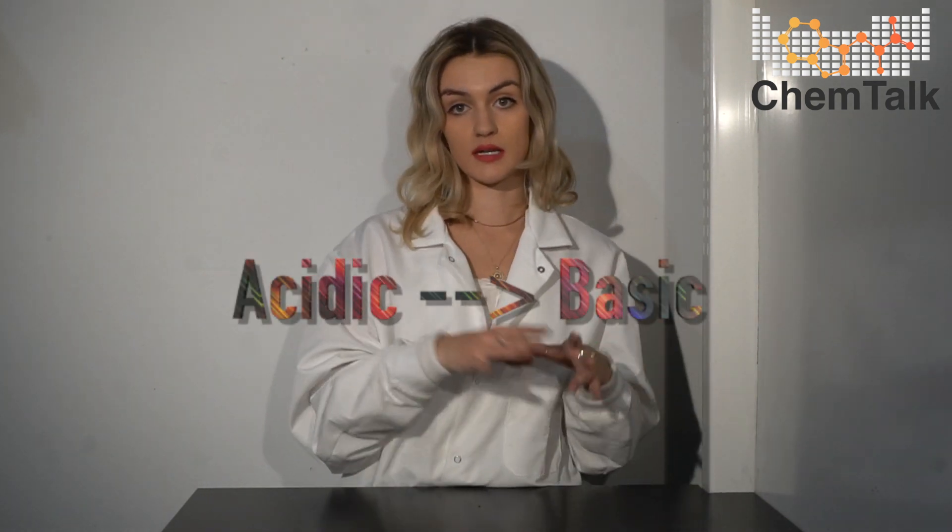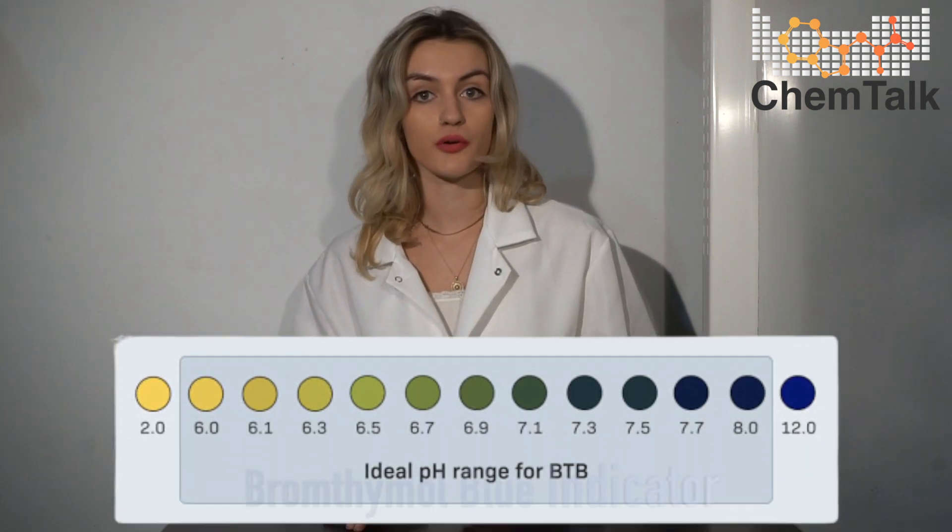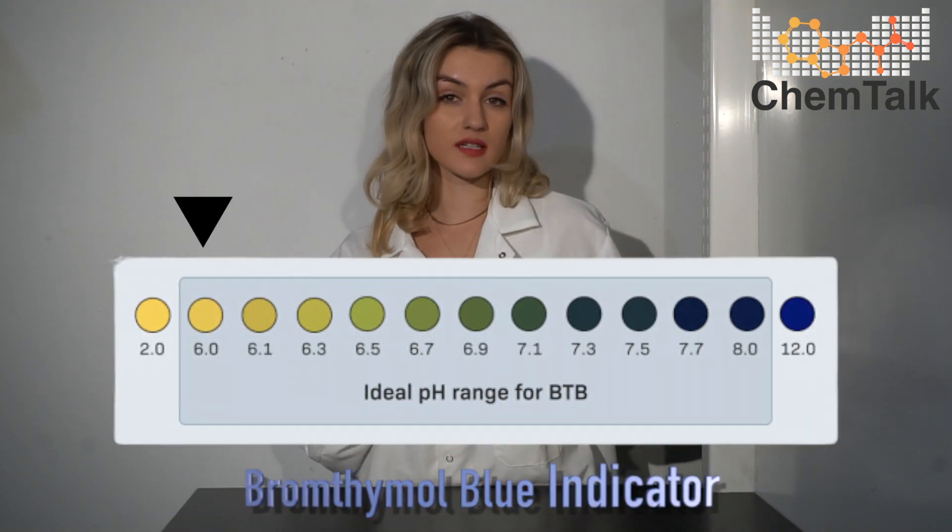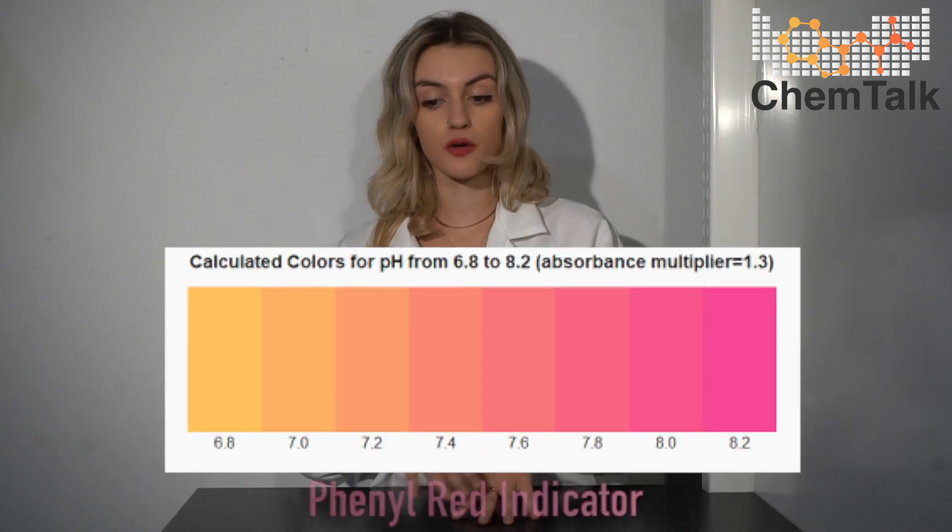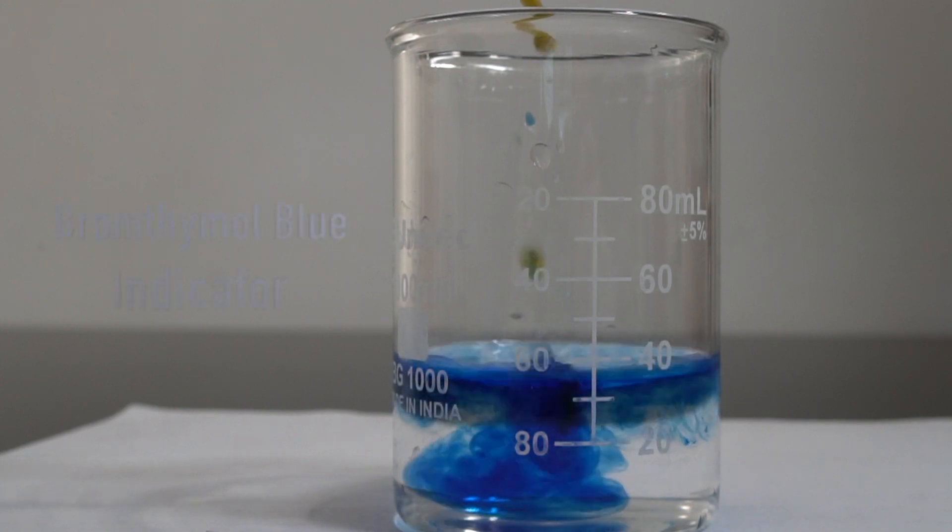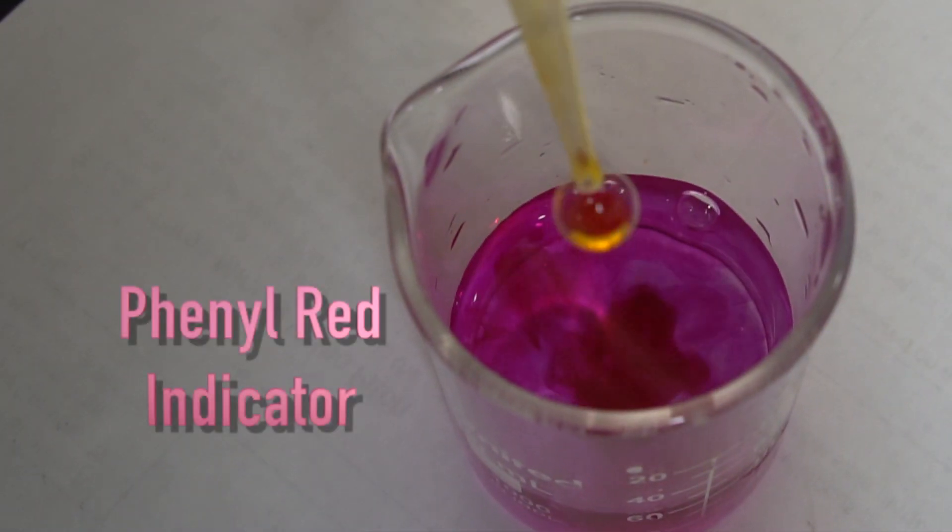pH indicators are the most effective in their intermediate range. This is the range of pH where it's changing from acidic to basic. For bromothymol blue, the indicator range is from about 6 to 7.5. And for phenol red, it's about 7 to 8. So if our soil is slightly acidic, we should be able to catch it with the bromothymol blue. And if it's slightly alkaline, we should be able to catch it with the phenol red.